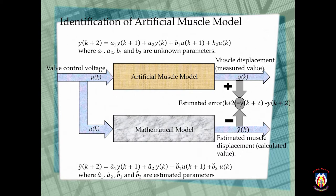And then by using the same input u(k), we can plug that into our mathematical model and then we can calculate our estimated muscle displacement, ŷ(k). And then by using that formula, we can find our estimated parameters of â₁, â₂, b̂₁ and b̂₂. And then the difference between ŷ(k) and y(k) is then our estimated error.